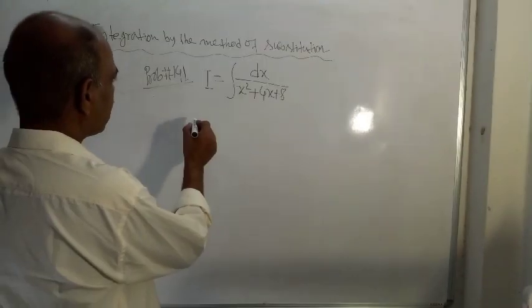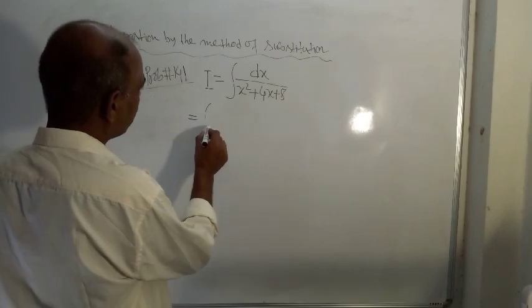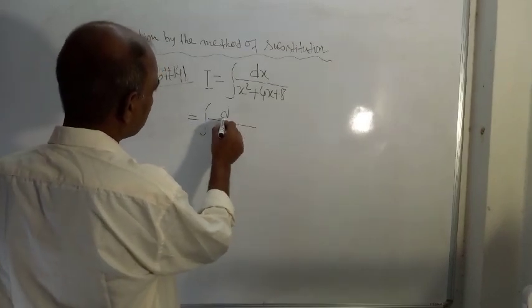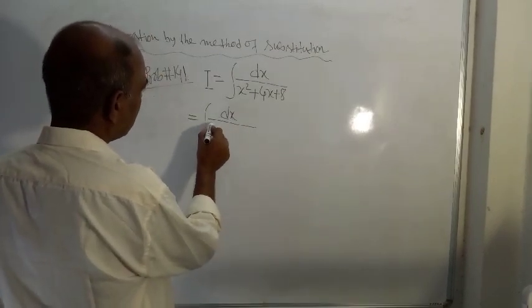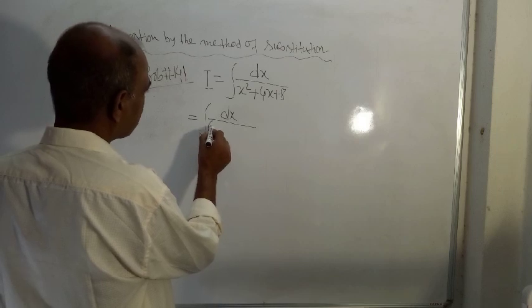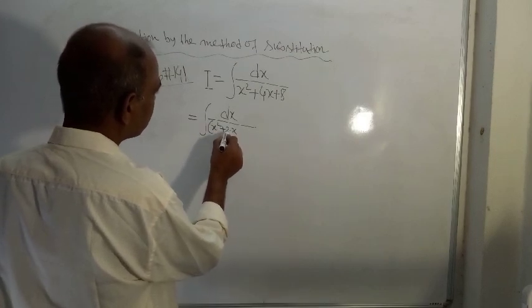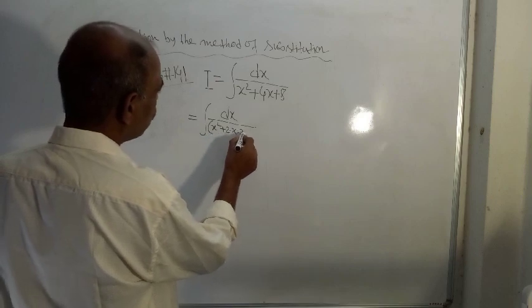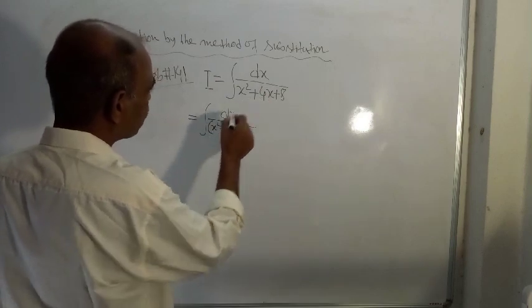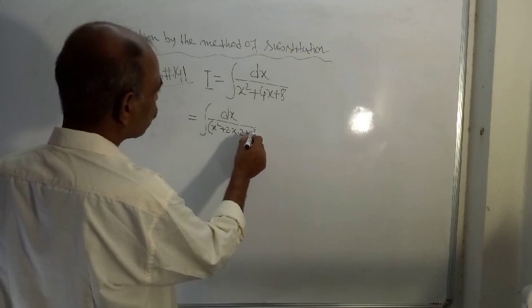So this problem is not difficult. This can be written as x square plus 2 into x. This is 2, into 2. So this becomes 4x plus 2 square.